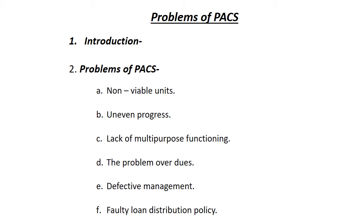The second problem is uneven progress. PACS are not developed all over India. In our country, Maharashtra, Gujarat, Tamil Nadu, Andhra Pradesh, and Uttar Pradesh are the states where PACS have been developed. But West Bengal, Bihar, and Assam have not developed. Only 11 states have developed the cooperative movement where 100% of farmers are associated with PACS. But in the remaining states, more than 50% are apart from PACS services, and this is harmful for rural development.